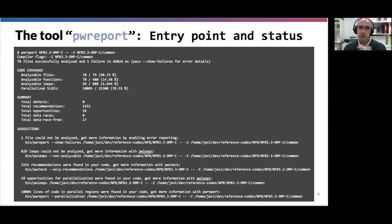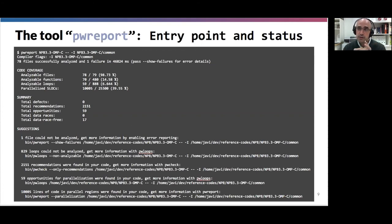The second part of pwreport output is a summary showing the metrics we introduced: defects, recommendations, opportunities, data races, and data-race-free loops that have been found. For example, on a NAS Parallel Benchmark OpenMP implementation in C — a very well validated code — the tool found zero defects. However, according to best practice recommendations, the code might still be improved, with over 2,000 recommendations raised by the tool, and nearly 60 new loops identified as parallelization opportunities. The tool also verified that 17 loops are data race-free.